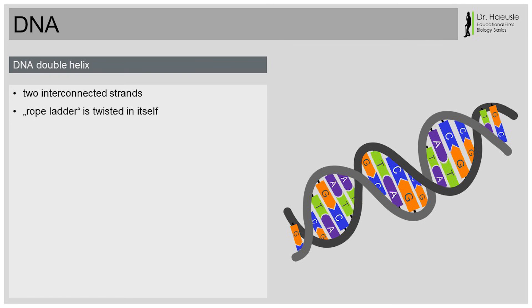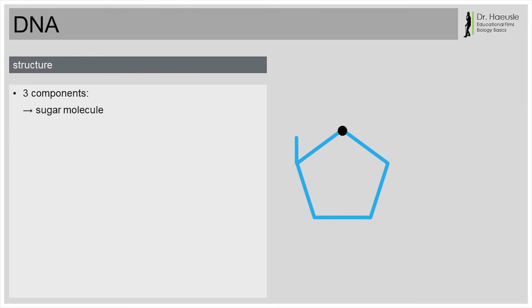And what does the DNA double strand consist of? The two strands consist of the same building blocks. Let's have a look at one of the DNA strands first. It is made up of sugar molecules, phosphate groups and bases. One sugar molecule is always connected to one base. In DNA, this sugar is a deoxyribose, hence the name deoxyribonucleic acid.